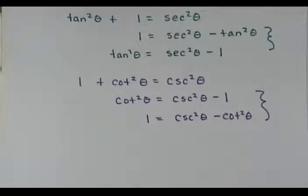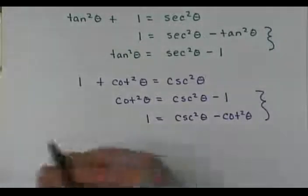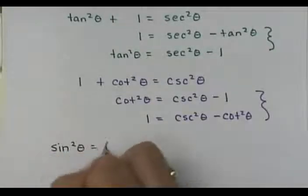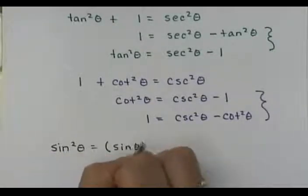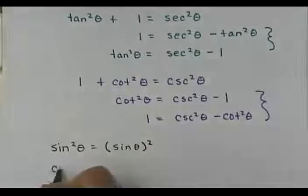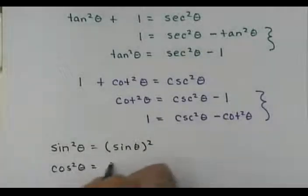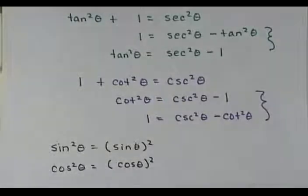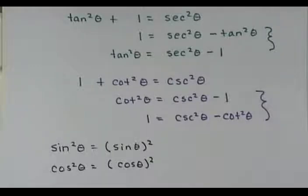One thing you need to know: when you see sine squared theta, this means the sine of theta, squared — same with cosine squared theta, meaning cosine theta squared, and so on. We put the square there so it doesn't look like the angle is what's being squared. Does everybody understand what sine squared theta means? Tangent squared theta?